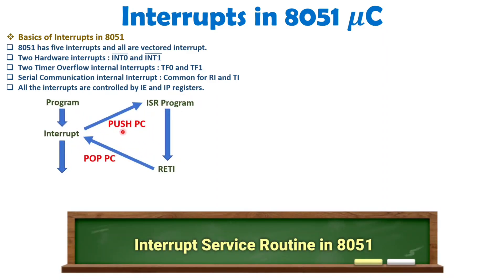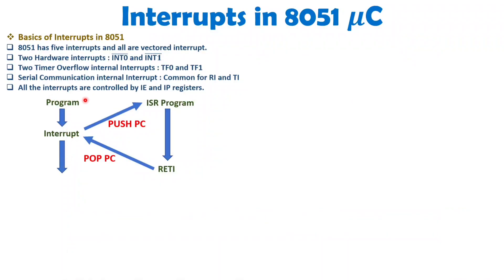Let us understand the interrupt service routine. Whenever the main program is executing and an interrupt occurs, program control transfers to a well-defined ISR location. The main program's address gets pushed onto the stack, and execution jumps to the ISR. After executing the ISR, you must execute the RETI instruction, which performs a pop PC to retrieve the original program address and return to the main program.